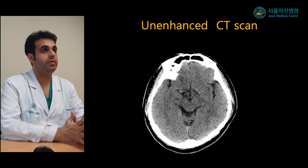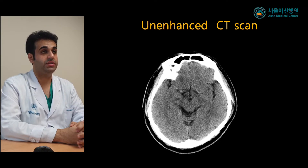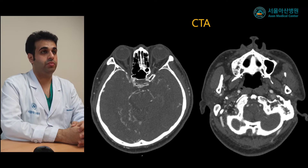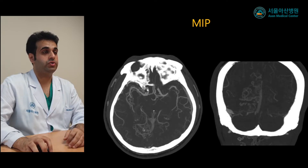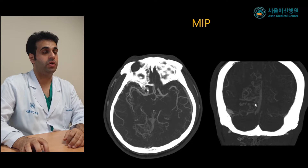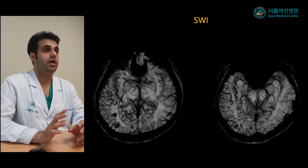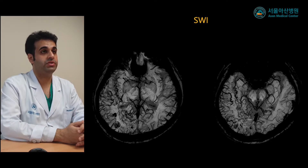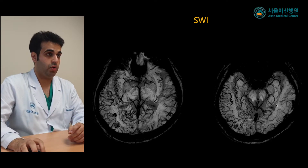We started with an unenhanced scan of the brain, and there was no abnormality seen. CT angiogram was performed and demonstrated multiple dilated vascular tortuosity at the right occipital and anterior temporal lobe. Some of these vessels are attached to the torcular and the posterior and superior sagittal sinuses. On susceptibility-weighted imaging, there is increased venous congestion at the right occipital-temporal region with multifocal blooming artifact at the right parieto-occipital region.